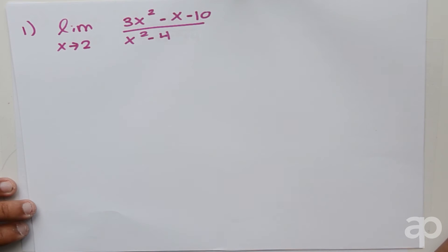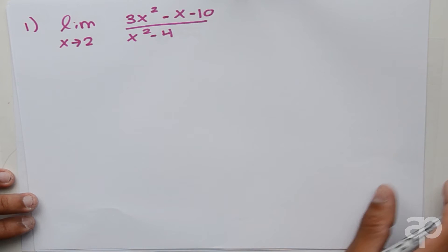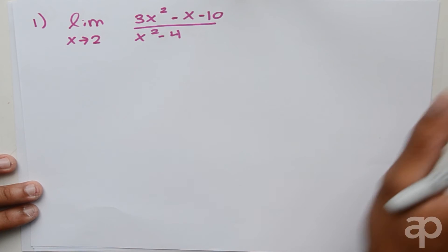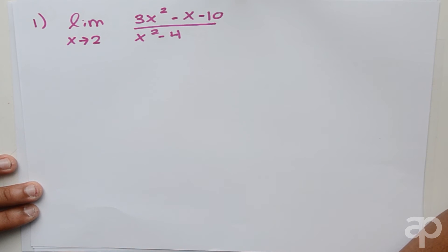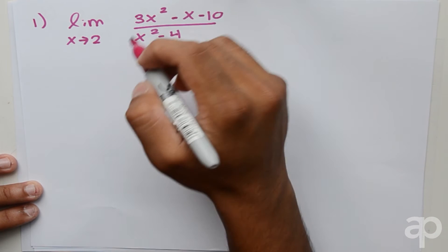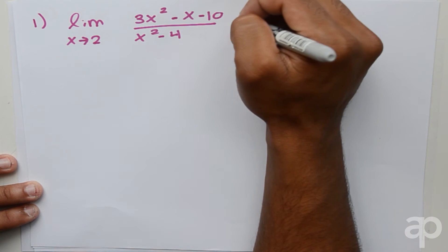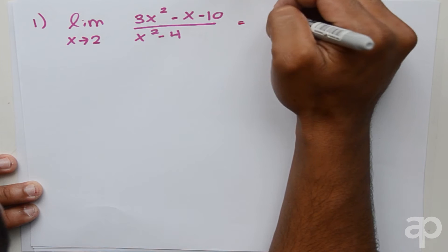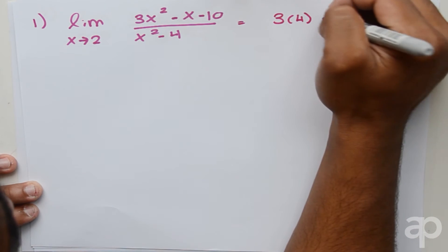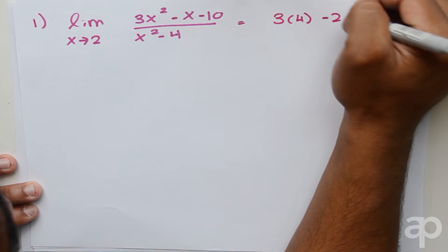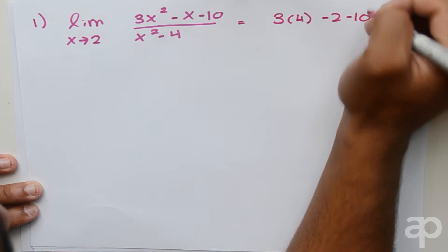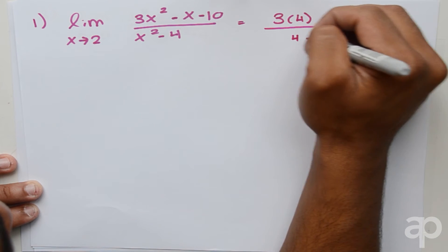Now let's say we're given the following function and asked to evaluate the limit as x approaches 2. In this case the graph is not provided, so algebra must be used. Plugging in 2 into the expression gives us 3 times 4 minus 2 minus 10 over 4 minus 4.